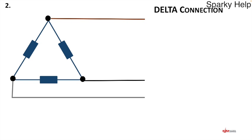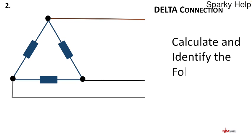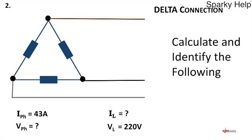In the meantime, let's have a look at question two before we come back and look at the answers. Here's a delta connection — this time consisting of three resistors. Not that it matters, it's just a calculation we're going to apply. Calculate and identify the following: i-phase is 43 amps, we need to find il, work out v-phase, and vl is 220 volts. Pause the video, have a look at the calculation, see how you get on.